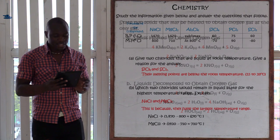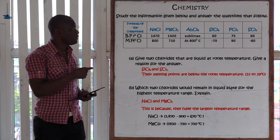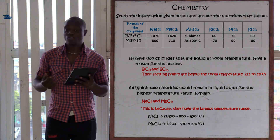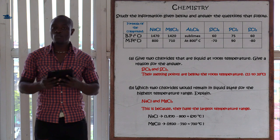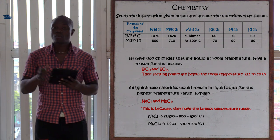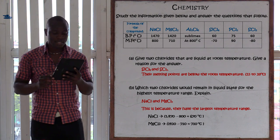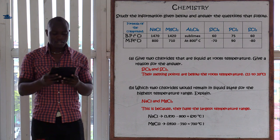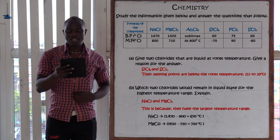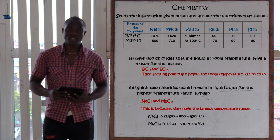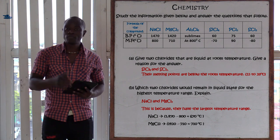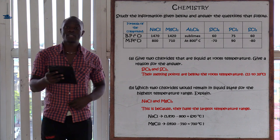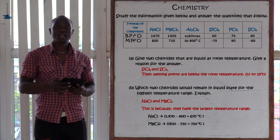Question number seven: study the information below and answer the questions. We have a table with the formula of compounds: sodium chloride, magnesium chloride, aluminium trichloride, silicon tetrachloride, phosphorus trichloride, and sulfur dichloride. The first question asks: give two chlorides that are liquid at room temperature and give a reason. The two chlorides that are liquid at room temperature are silicon tetrachloride and sulfur dichloride.